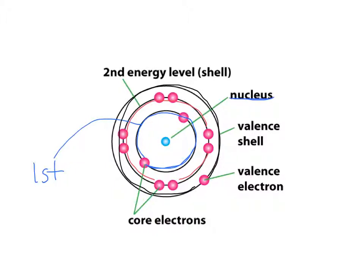The energy level furthest away from the nucleus that still contains electrons is called the valence shell. In this case, the valence shell is the third energy level and it holds only one electron. All the other electrons — two in the first shell and eight in the second shell — make ten electrons total, which we call core electrons, like the core of an apple at the center. So the inner shells contain ten core electrons and there is only one valence electron.